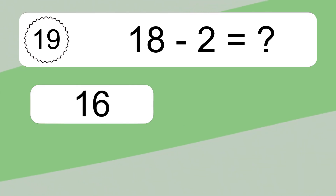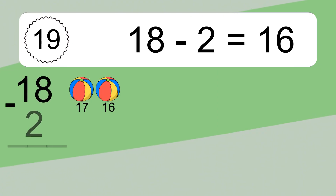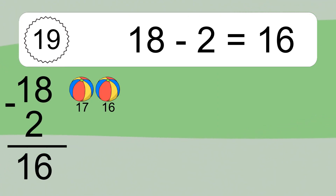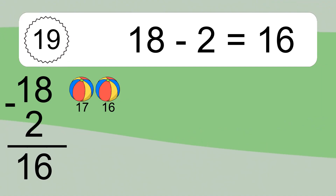18 minus 2 equals what? 18 minus 2 equals 16. Let's count it: 17, 16.